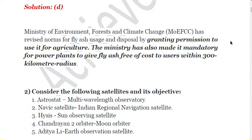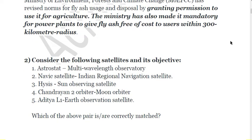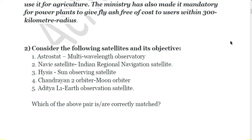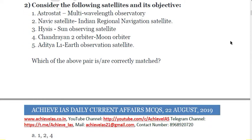The second question: consider the following satellites and their objectives. First, Astrosat — Multi Wavelength Observatory. Second, NavIC Satellite — Indian Regional Navigation Satellite. Third, a Sun Observing Satellite. Fourth, Chandrayaan-2 Orbiter — Moon Orbiter. Fifth, Aditya-L1 — Earth Observation Satellite. Which of the above pairs are correctly matched?